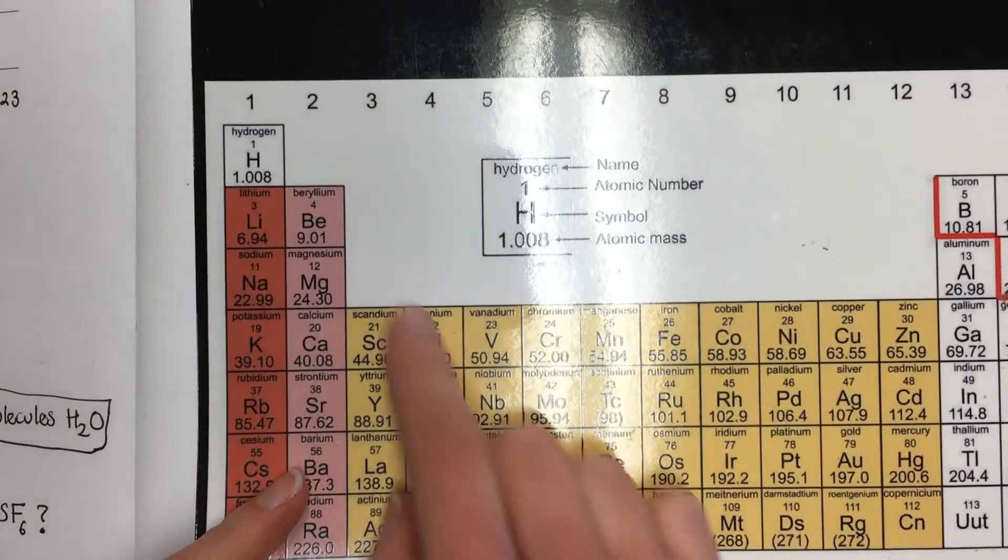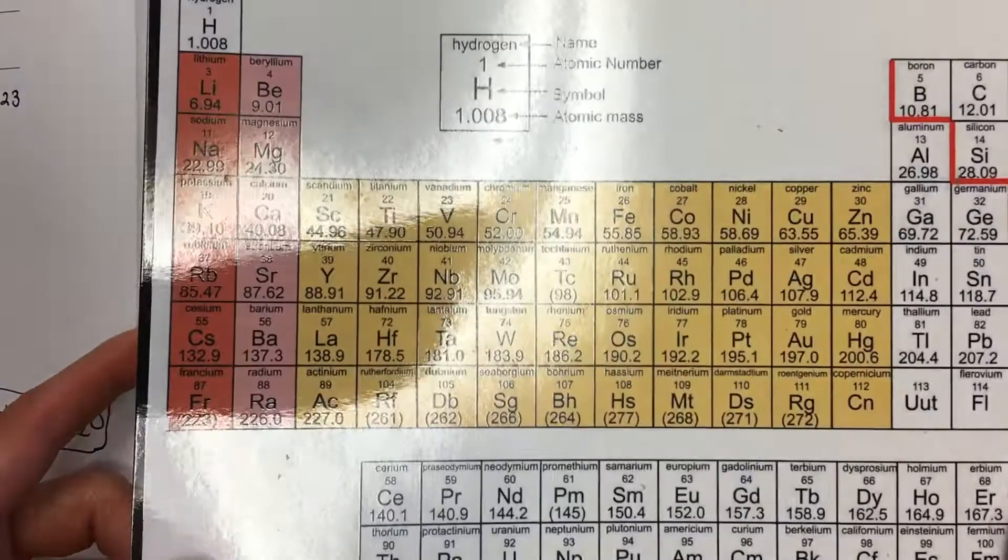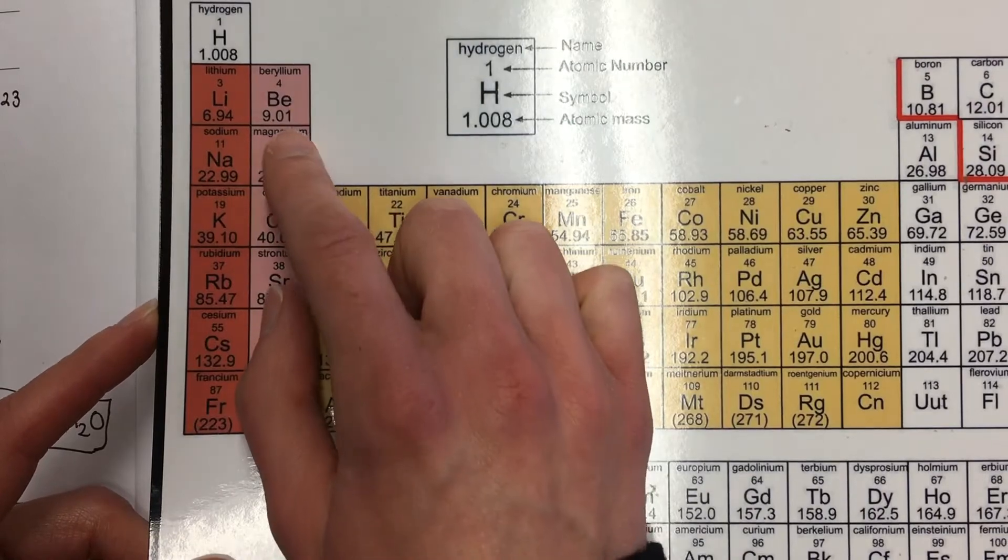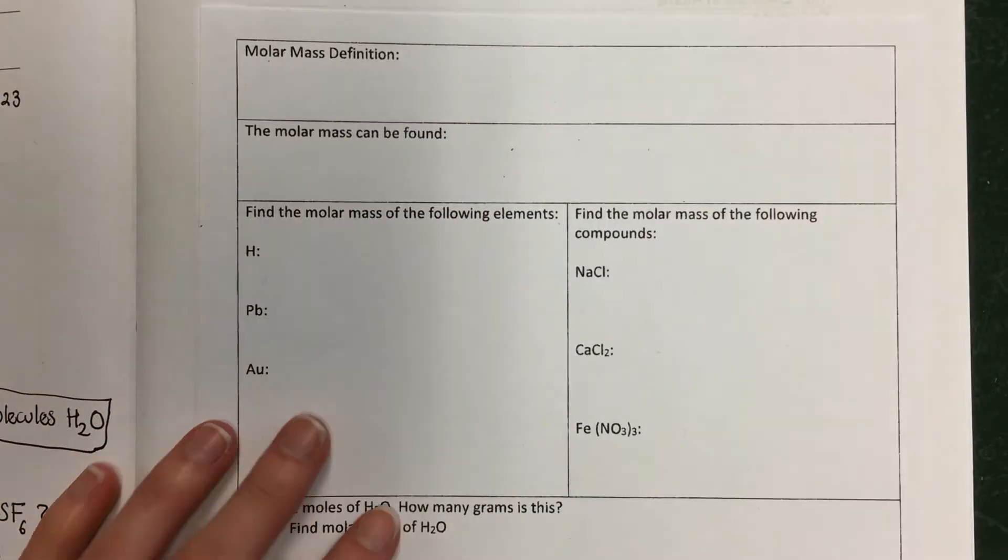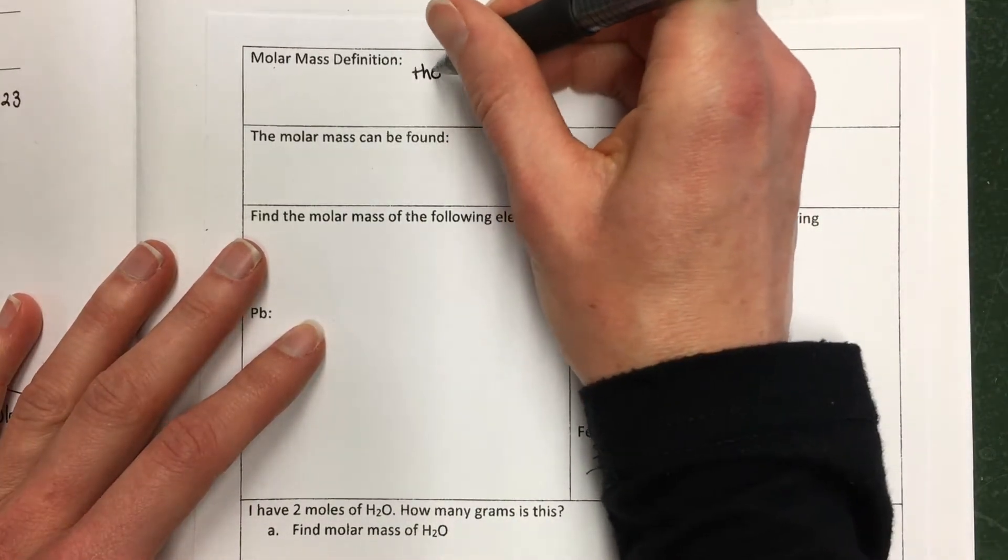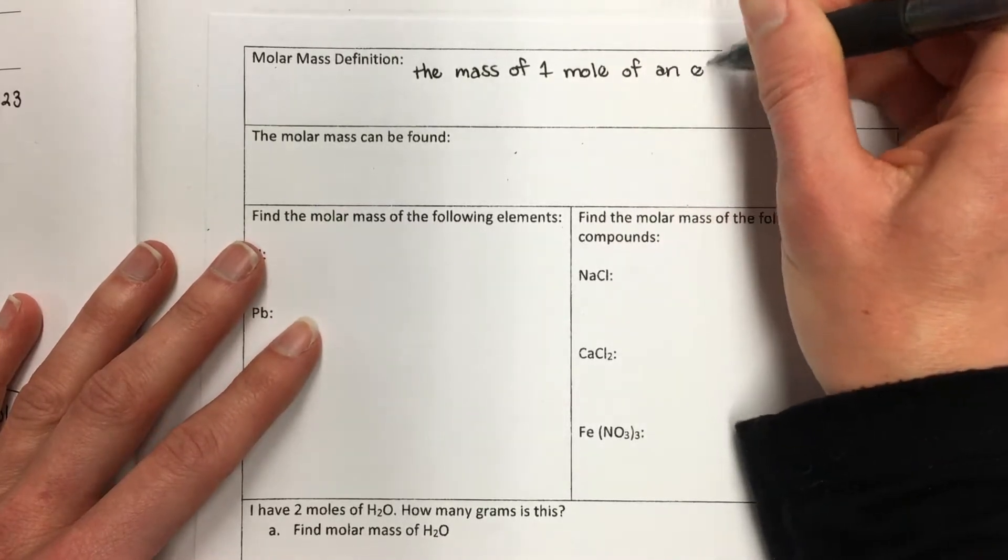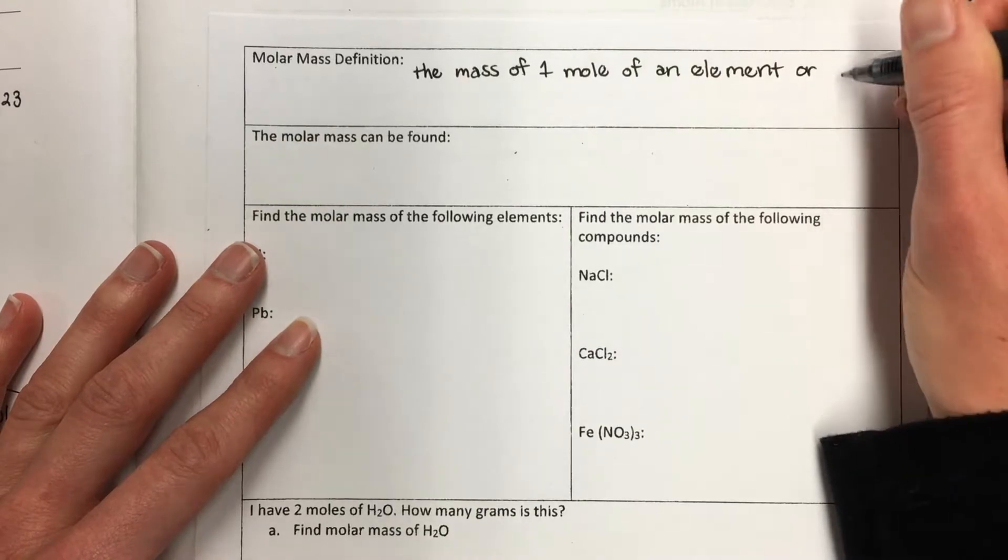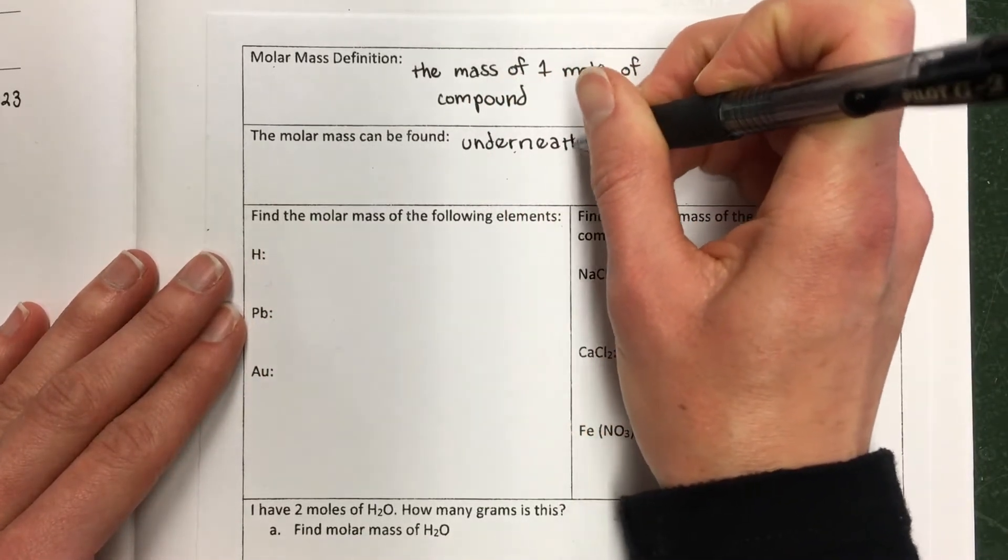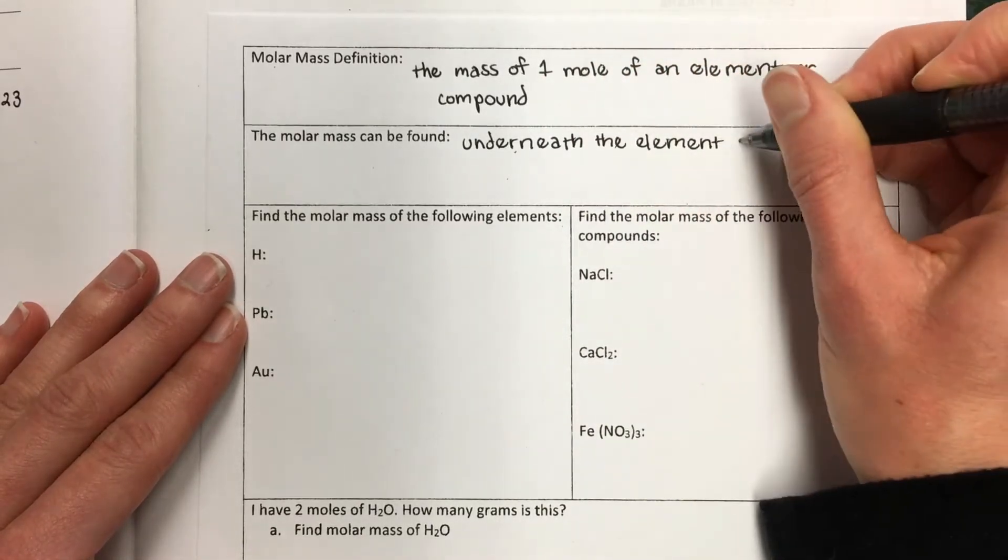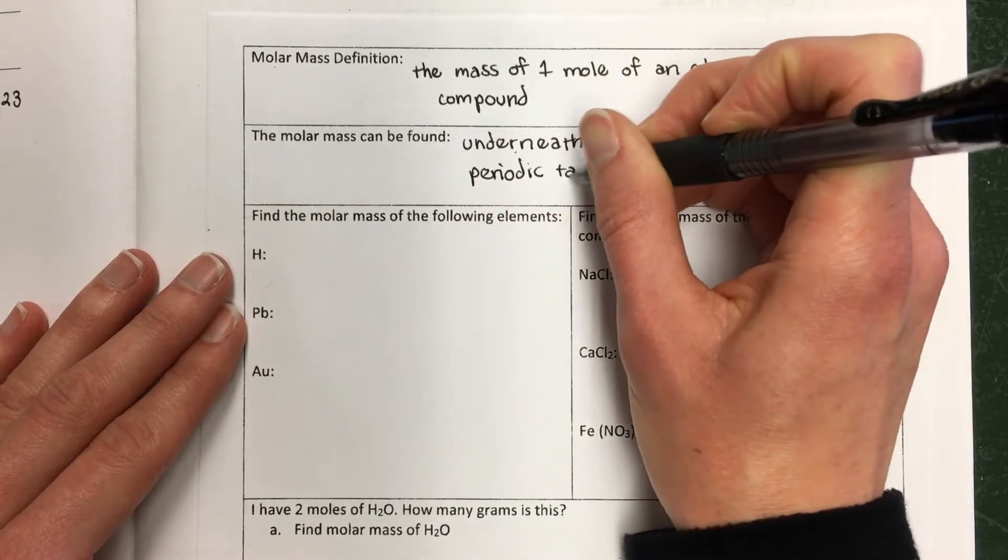Conveniently, it turns out that one mole of hydrogen is 1.008 grams. In fact, that's how we defined the mole. We wanted the mole to equal this number on the periodic table. So a mole of lithium is 6.94 grams. A mole of beryllium is 9.01 grams. So if you want to know the mass of one mole of any element, you just find it on the periodic table. The molar mass is the mass of one mole of an element or compound. The molar mass can be found underneath the element symbol on the periodic table.